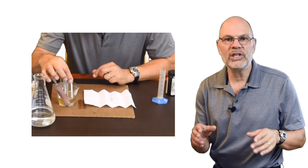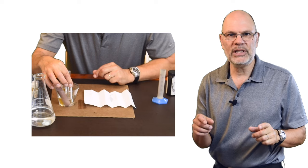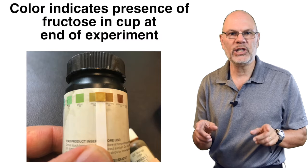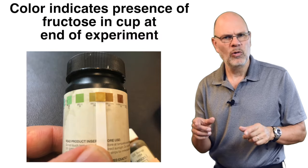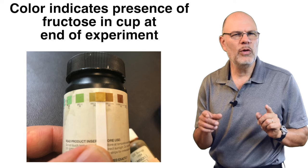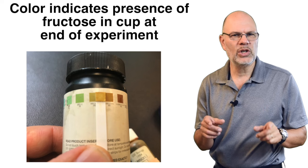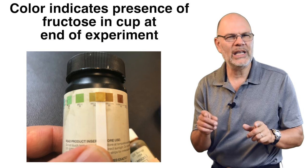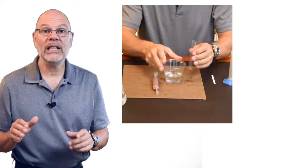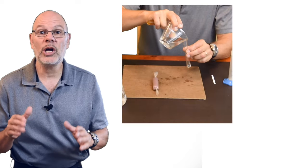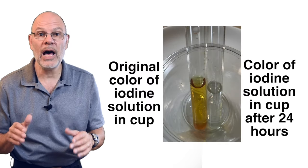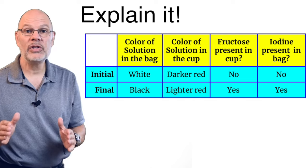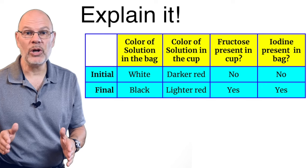Also notice that when we use this test strip to test for fructose in the cup, we get a positive result. Remember the setup — there was no fructose in the solution in the cup at the start of the experiment, but there is now. Finally, let's compare the color of the iodine solution in the cup to the color in the test tube. Here's a table summarizing the results.